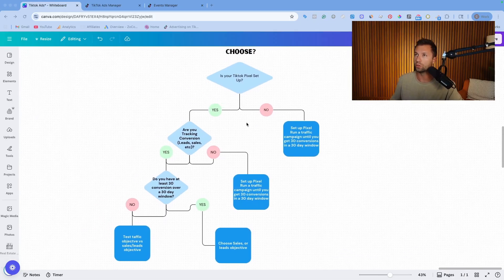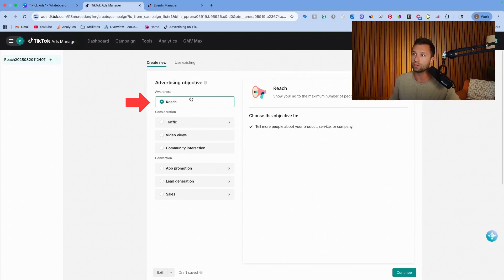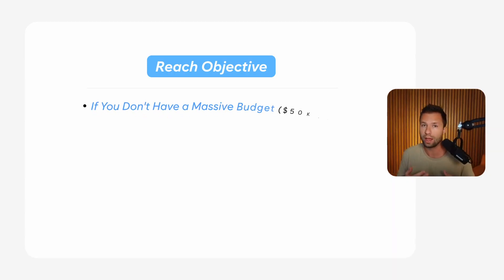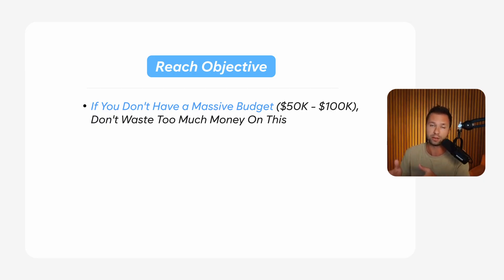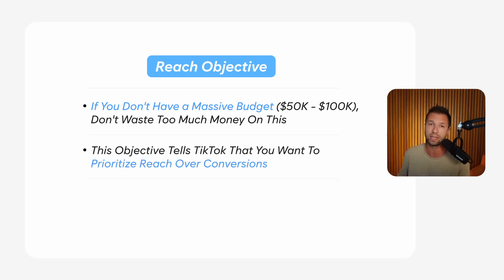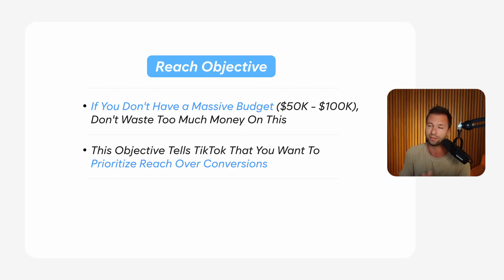The first one is the reach objective. To be honest, if you don't have a massive budget — I'm talking probably close to $50,000 to $100,000 a month — you probably don't want to waste too much money on the reach objective. With reach, all you're doing is telling TikTok you want to show your video to as many people as possible and you don't care if they convert, buy, or fill out a lead form. If your budget is under $100k a month, don't worry about the reach objective.